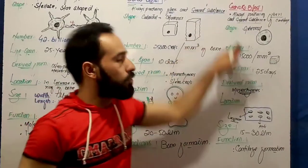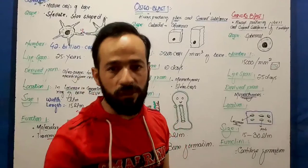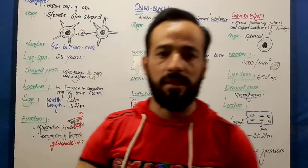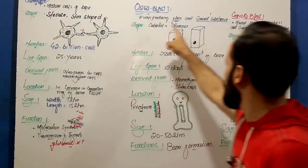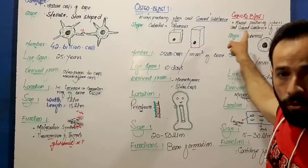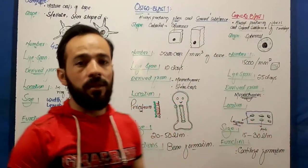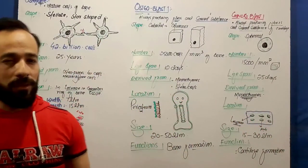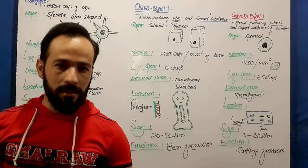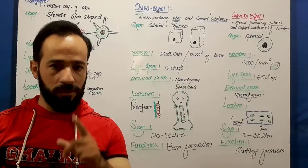This was about the chondroblast. Up to now we have covered 4 cells of the connective tissue: the osteocyte, osteoblast, chondrocyte, and chondroblast. The next lectures will be about the next cells of the connective tissue — see you guys there.